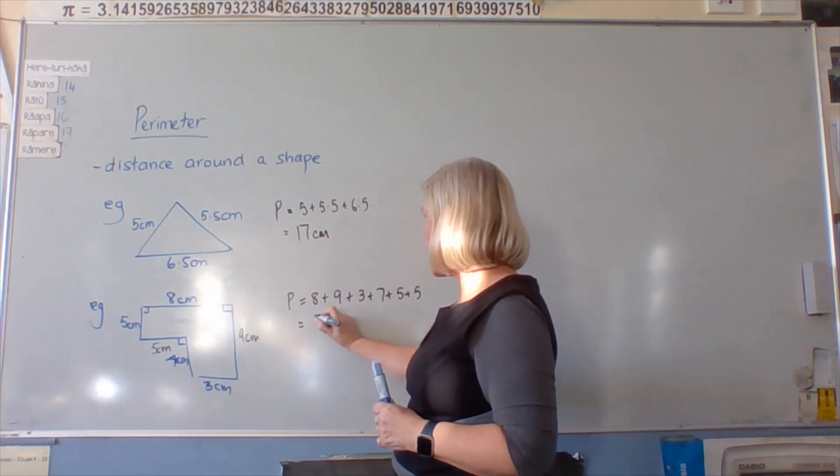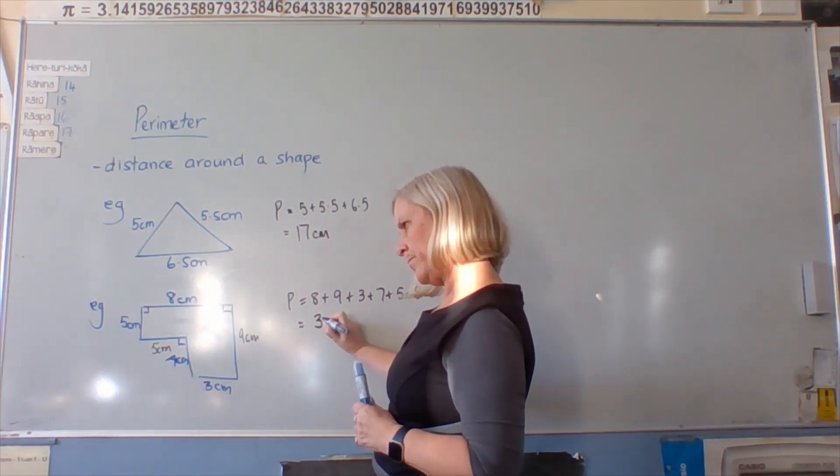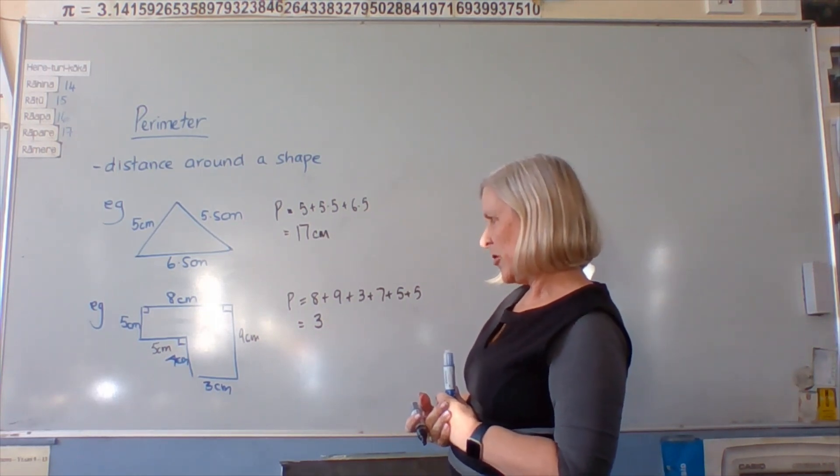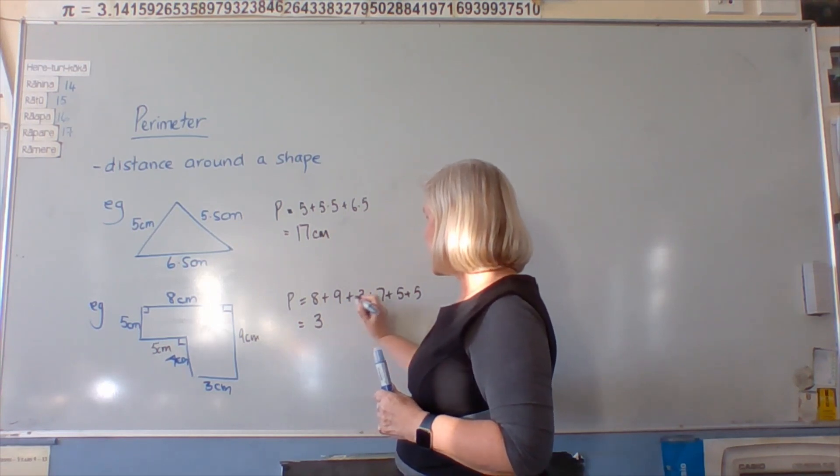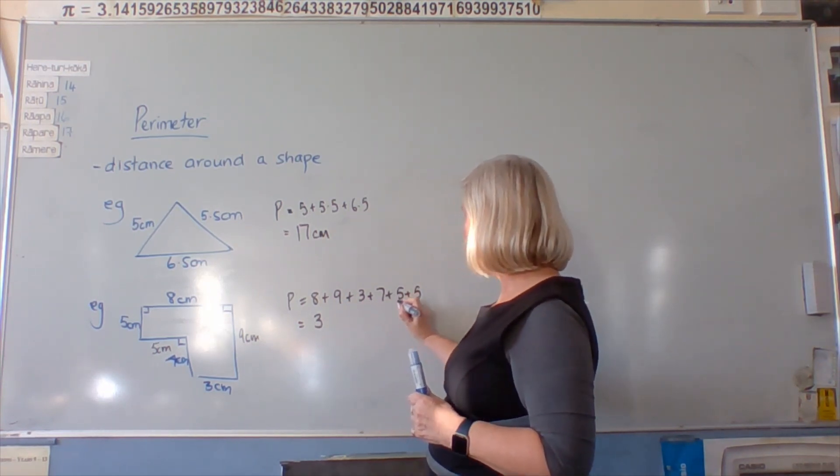30. 37. I think you're right. 17 plus 3 is 20, 27, 37.